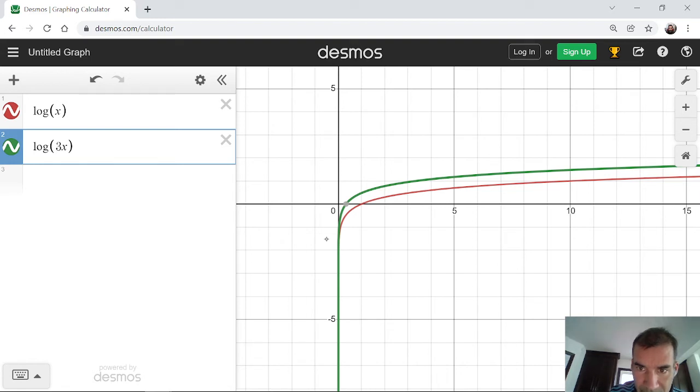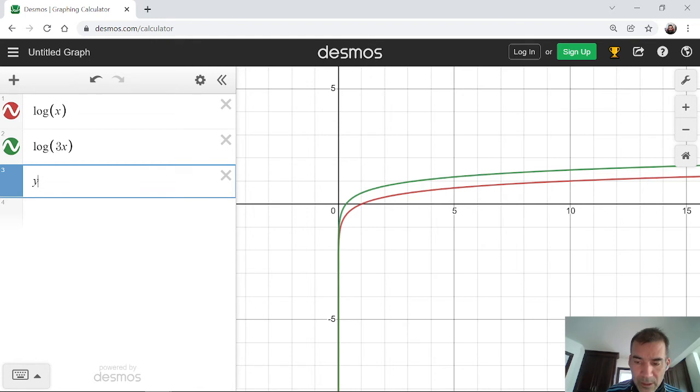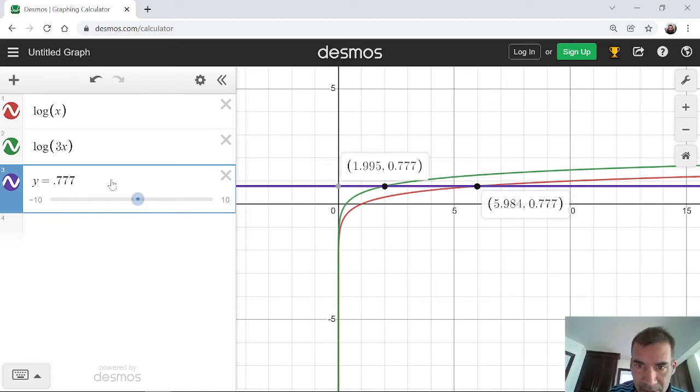So here we're at the same height as we were here. And I can show you that by plotting the line y equals 0.777. We get to that height when x is equal to 6 on log x. And we get to exactly the same height when x is equal to 2, which is 1 third of 6 on the log of 3x.